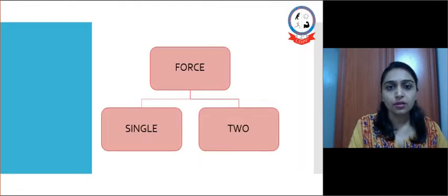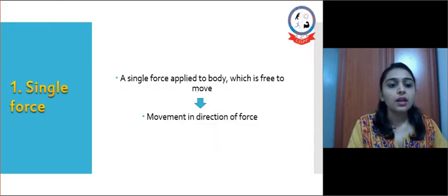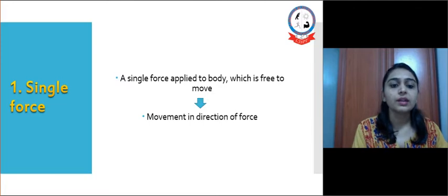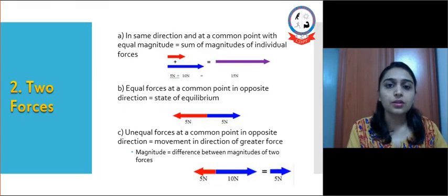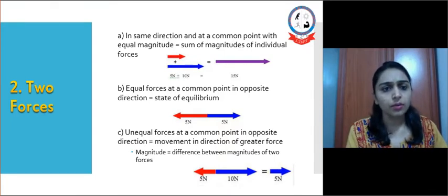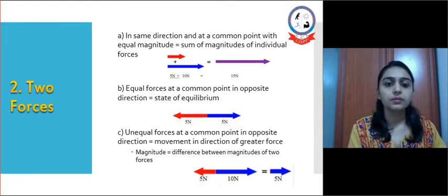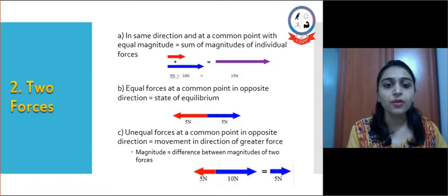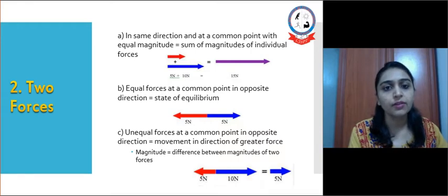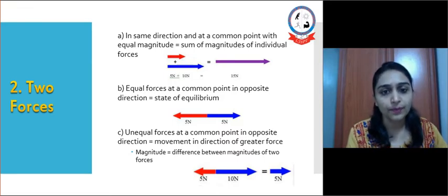Force can be divided into single or two forces applied on a body. A single force applied to a body which is free to move will produce movement in the direction of the force with that magnitude. If two forces are applied in the same direction at a common point, the resultant force is the sum of the magnitudes of the individual forces. As shown in the figure, the red arrow is 5 newtons and the blue arrow is 10 newtons, both applied in one direction, giving a resultant of 15 newtons.